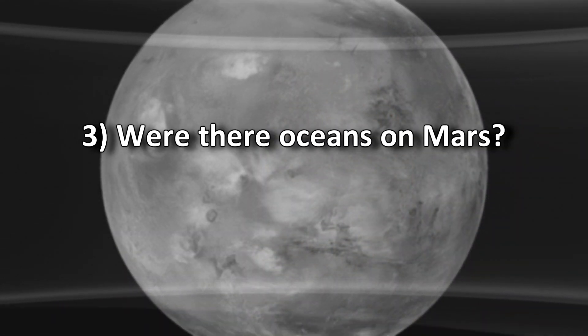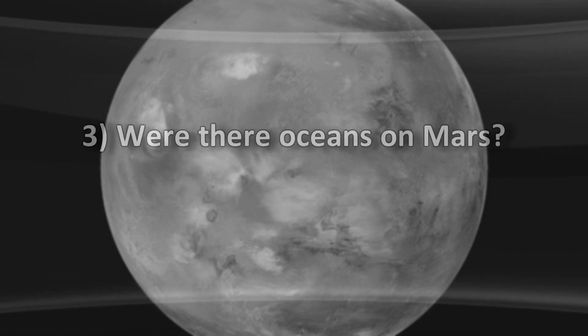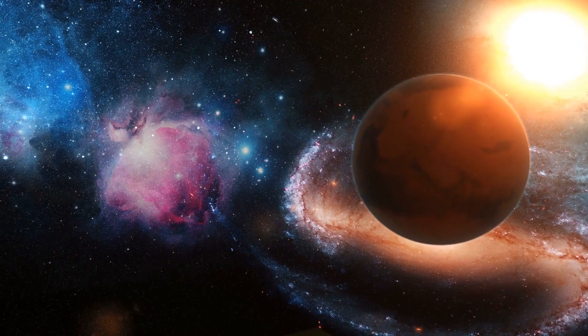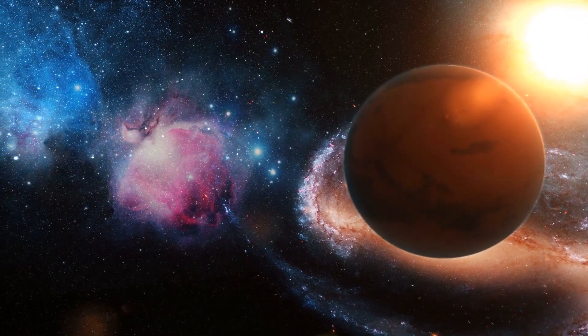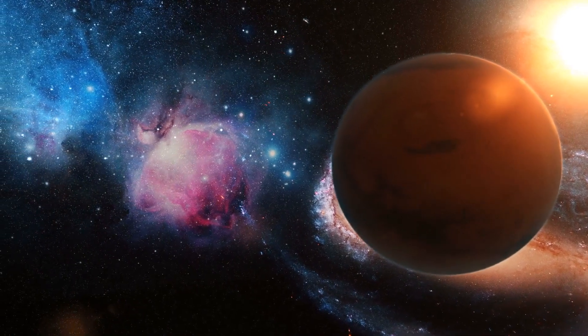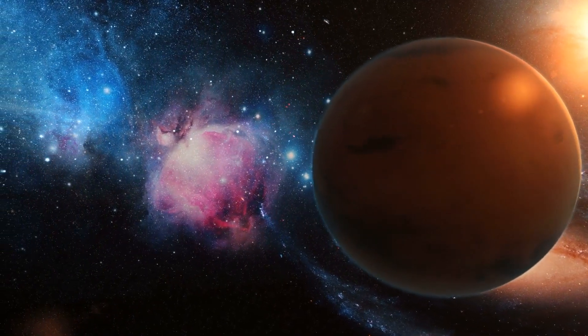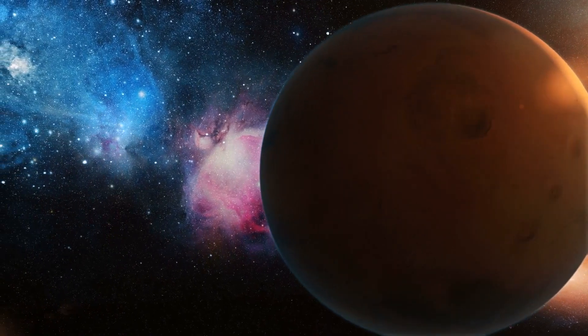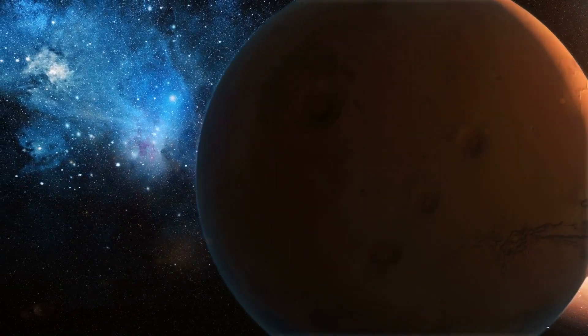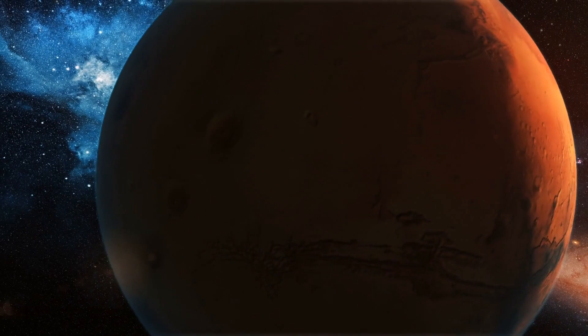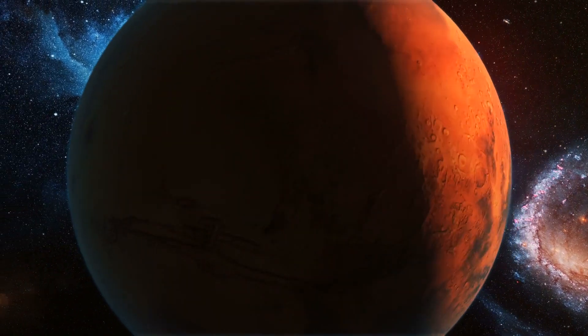Were there Oceans on Mars? Past missions to Mars have revealed that some of the features of the planet's landscape like river deltas, vast oceans, and valleys. All these features required water to cut through the rocky exterior. However, current models of Mars climate render this event as not possible.